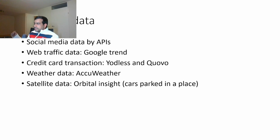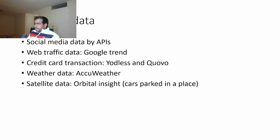Things changed after the US election of 2016 — access became stricter and there are more restrictions in place. But there are other sources of alternate data. For example, web traffic data can be received from Google Trends. Credit card transaction data can be obtained from private companies that track it — in Europe there are many companies providing data related to credit card transactions to assess credit worthiness. Weather data is difficult to get; you can get it from weather agencies but the quality may not be great. Private companies now offer better quality weather data for a fee.